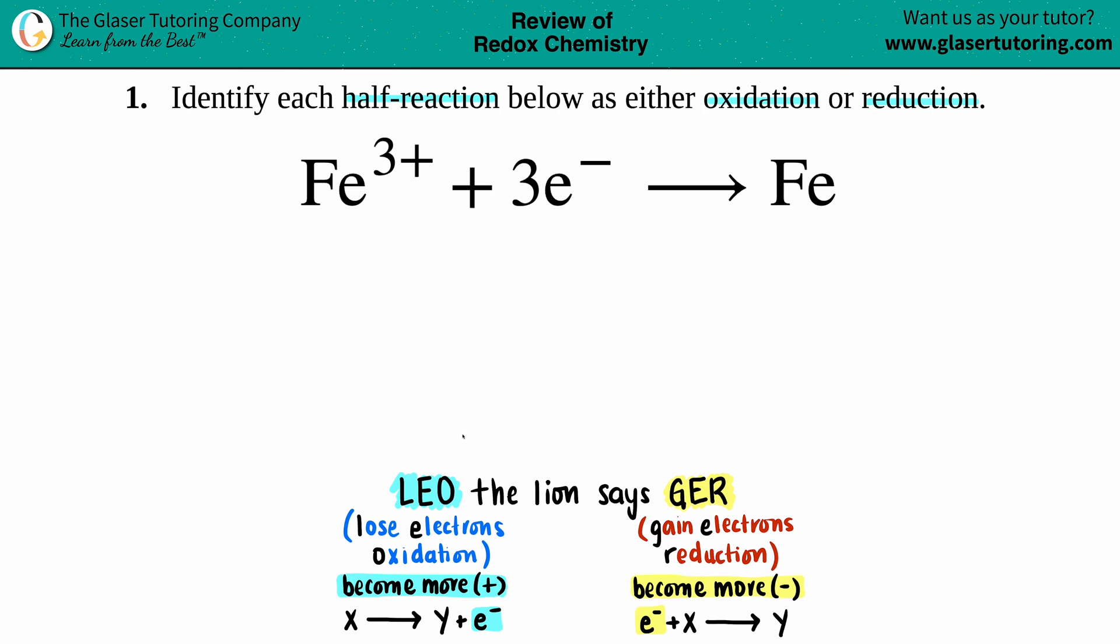I like to think of this mnemonic: LEO the lion says GER. When I was in school it helped me figure out which one was oxidation and which one was reduction. LEO means Lose Electrons = Oxidation. GER means Gain Electrons = Reduction. So whenever you're losing electrons, you're undergoing oxidation; whenever you're gaining electrons, you're becoming reduced.